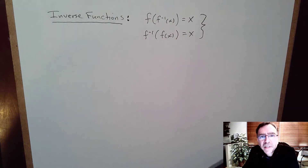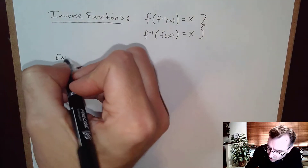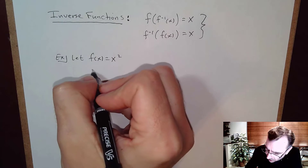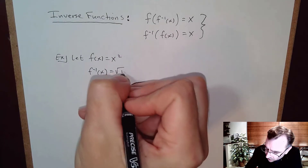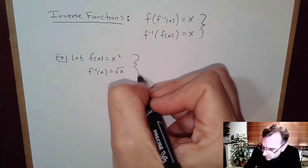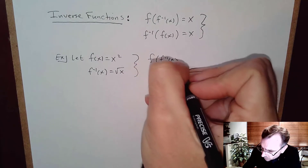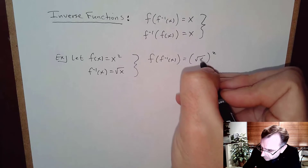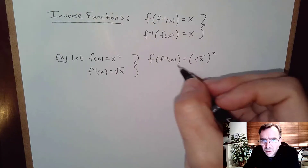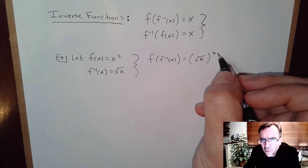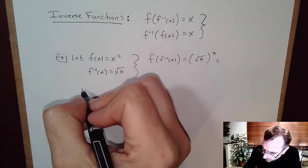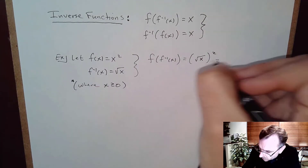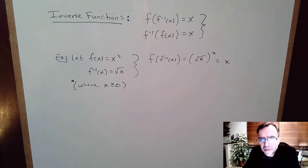For example in algebra, F of X equals the squaring function, and its inverse is the square root of X. When I do F composed with F inverse, I'm plugging F inverse into F, so F composed with F inverse equals the square root of X squared. Over positive numbers, squaring a square root just returns the argument X — they cancel.